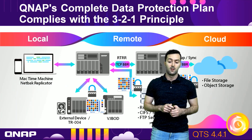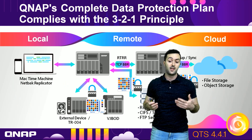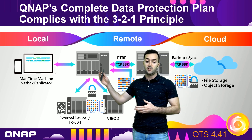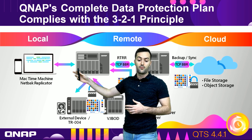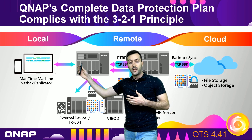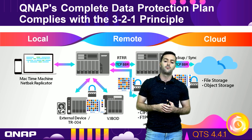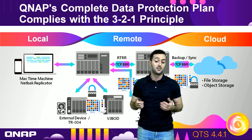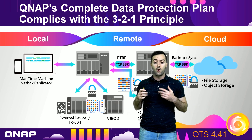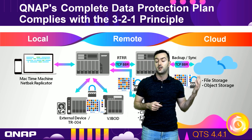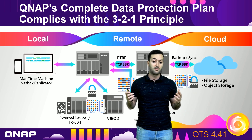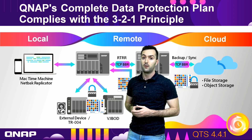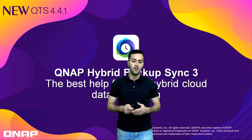QNAP NAS also follows the 3-2-1 principle on data backup. You can use Mac Time Machine for MacBook users, NetBak Replicator to integrate local data to the NAS, and achieve a better backup strategy using a remote NAS and external devices like the TR-004. Then move on with TCP BBR to file storage or object storage on the cloud — three copies of files on two different devices, with one copy off-site.